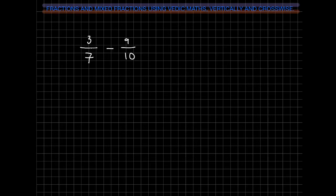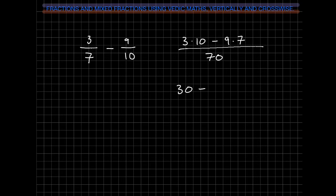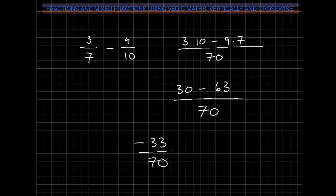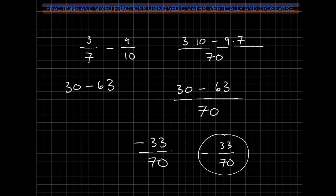Let's do another one with subtraction: 3 sevenths minus 9 tenths. We do our vertically and crosswise: 3 times 10 minus 9 times 7 for our numerator. Our denominator: 7 times 10 is 70. So we have 30 minus 63 over 70. You notice we're going to have a negative number: 30 minus 63 gives us negative 33 over 70, so our answer is negative 33 seventieths. An easy way to handle this: just say 63 minus 30 and tack a negative sign in front. Subtract the smaller from the bigger and then add the negative sign.